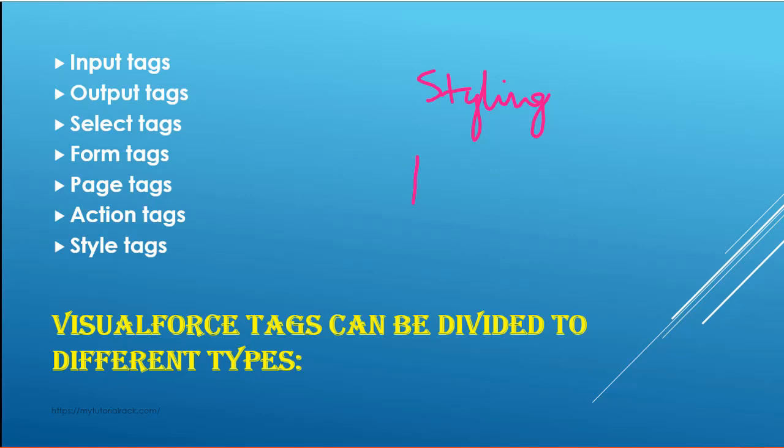Then you have action tags. For example, if you wanted to make sure that when the user clicks a button, certain things happen — that's what action tags are for. In action tags you specify which method to invoke whenever that button is clicked. So those are called action tags.